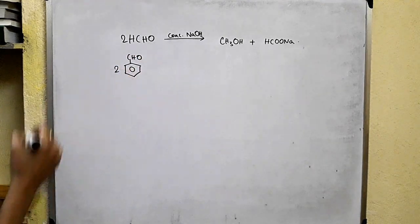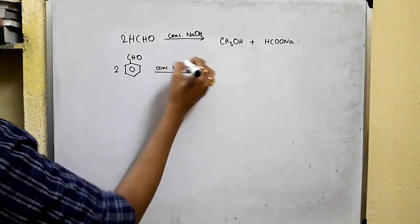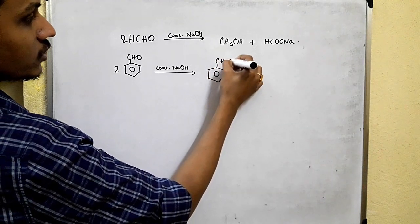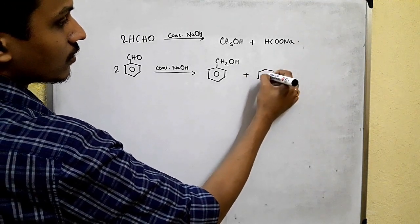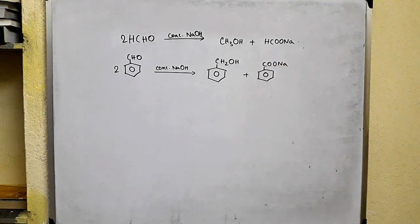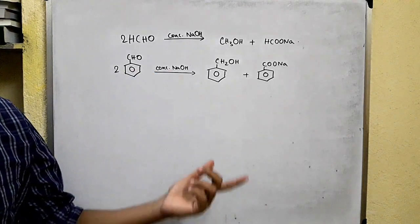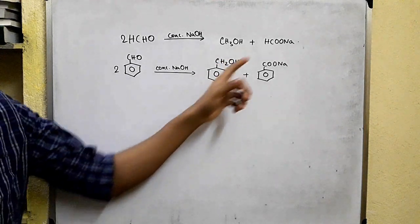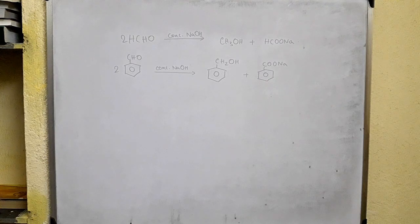Benzaldehyde: two molecules of benzaldehyde on treatment with concentrated NaOH give a mixture of benzyl alcohol and sodium benzoate. So in this reaction, half the aldehyde reduces the other half to a primary alcohol and is itself oxidized to the carboxylate, or salt of a carboxylic acid.